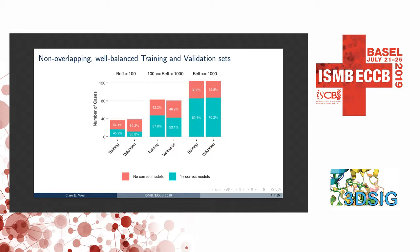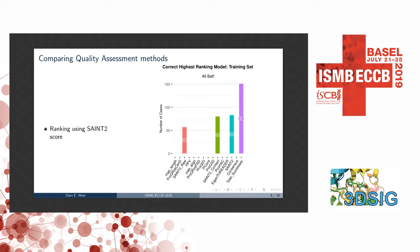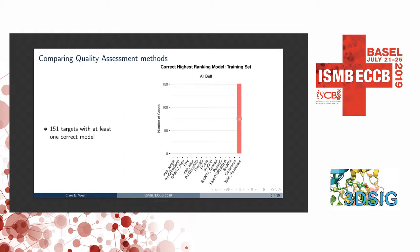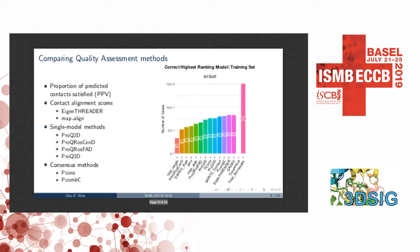We generated 500 models for each target in our training set and looked at how often the highest-ranking model according to SAINT2 is actually correct. We found that we managed to get at least one correct target for 151 targets overall, and SAINT2 was able to rank a correct model at the top for 83 of those targets. Although that's quite good, we don't know which 83 targets actually have a correct answer.